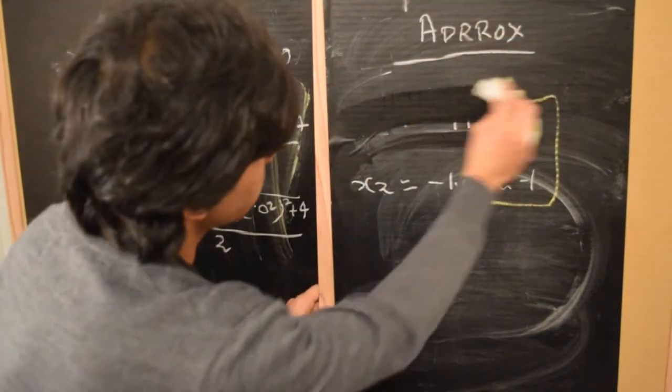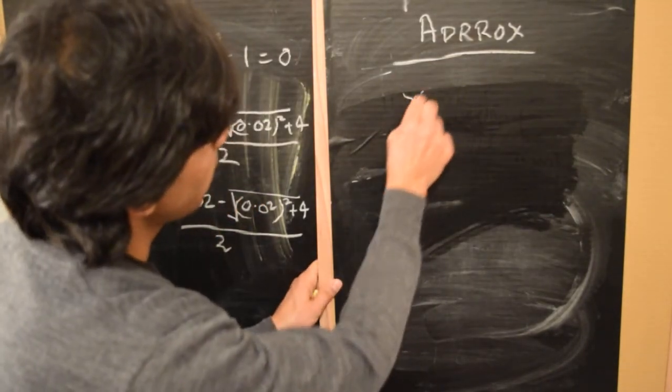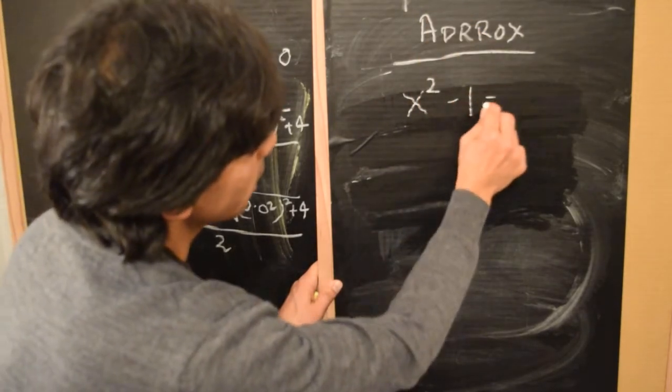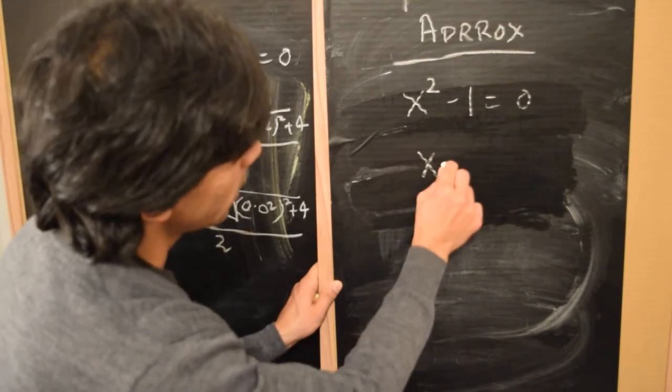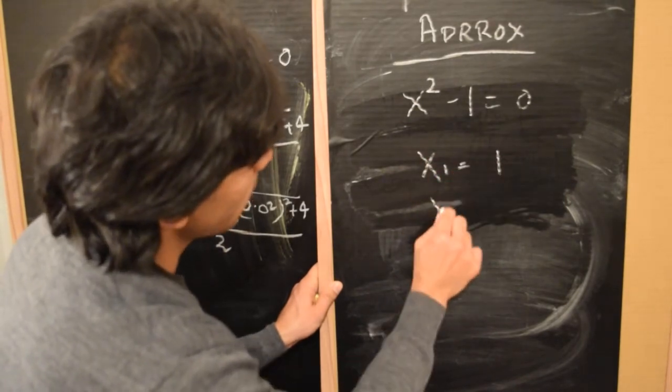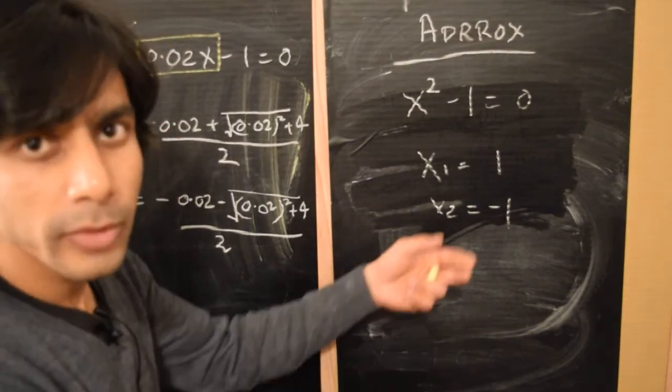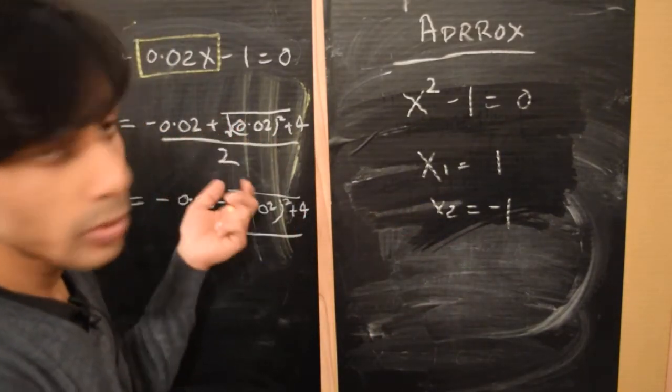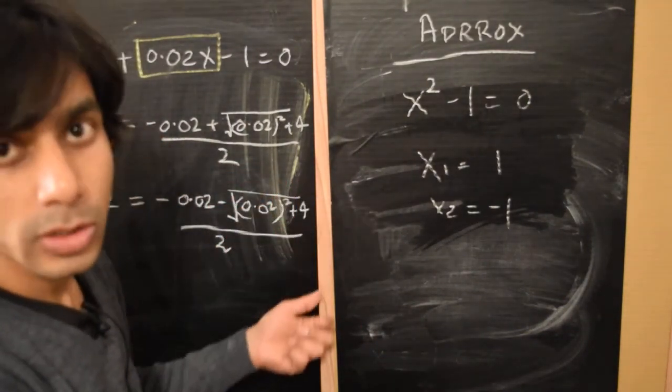The approximate equation would be x squared minus 1 equals 0. And we know the roots of this equation are x1 equals 1 and x2 equals minus 1. And these are very close to the roots of this equation, or rather to the approximate roots of this equation.